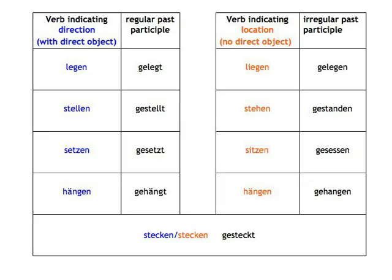Look at the table. Verbs indicating direction, that can take a direct object, have a regular past participle. Verbs indicating location, that don't take direct objects, have irregular past participles: liegen — gelegen, stehen — gestanden, sitzen — gesessen, hängen — gehangen.